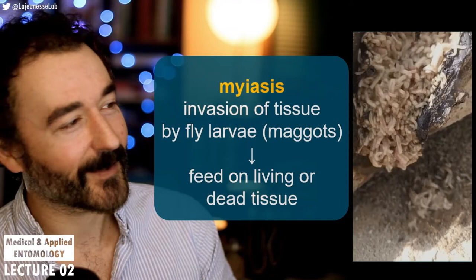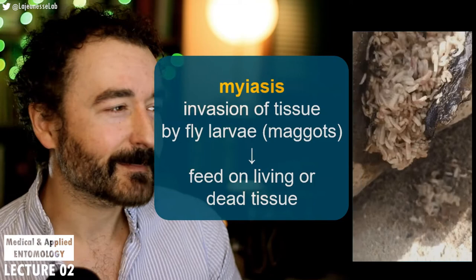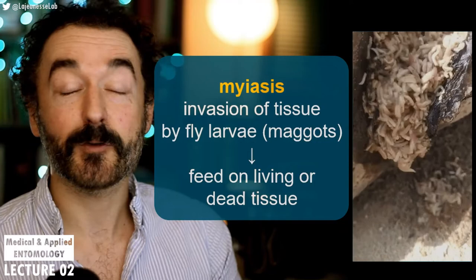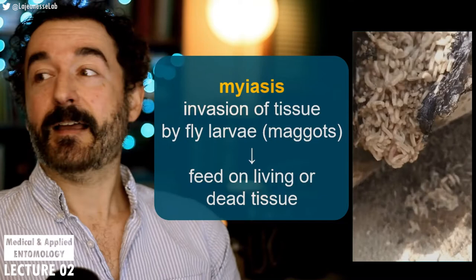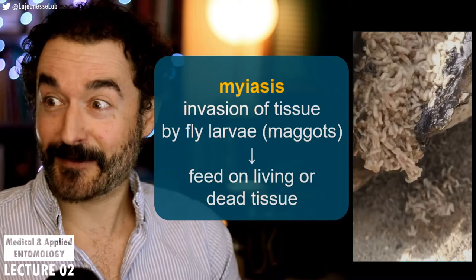The beginning definition I want you to know is myiasis. Myiasis is a catch-all for many types of infections that humans, domesticated animals, or our pets get from flies. The flies may be doing two things: one, they may be eating decaying flesh, or two, they may be eating living flesh — and that's the fly we're going to talk about today.